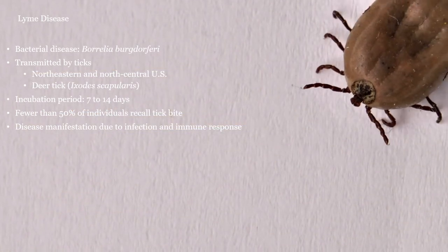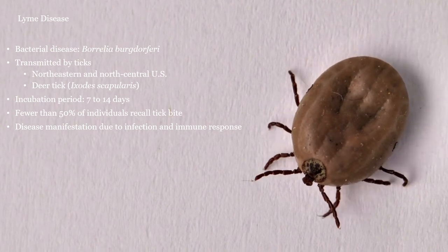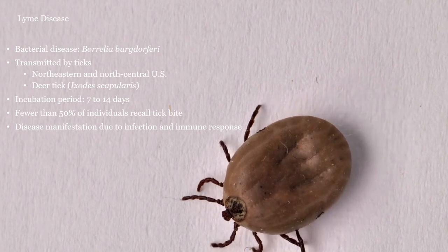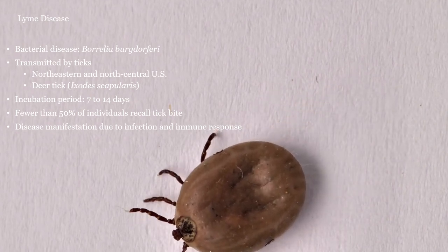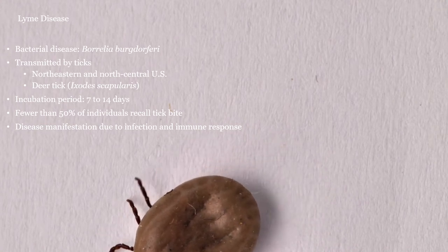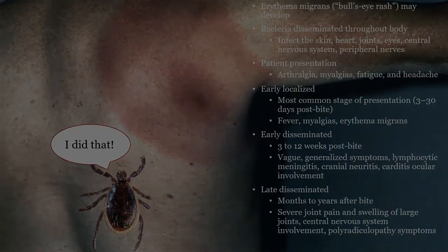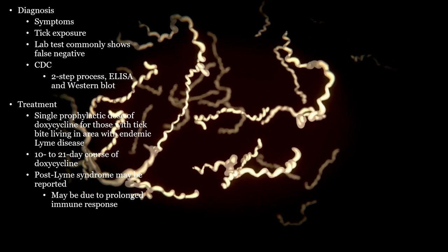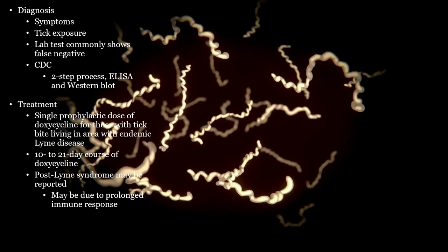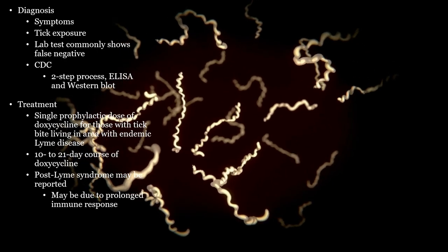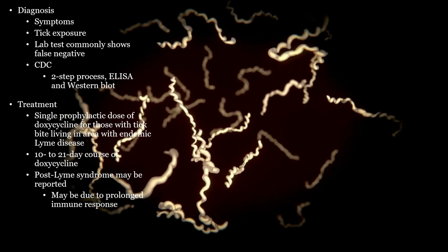Lyme disease is from tick bites, particularly the deer tick. It is predominant in certain geographical areas, and the bacteria responsible is Borrelia burgdorferi. Less than half recall the tick bite, and it can take up to two weeks before symptoms begin. A bullseye rash is characteristic of this disease. It usually presents with arthralgias, fatigue, myalgias, and headache. It can worsen if not treated, but once treated should improve. There is also a chronic version following treatment with some controversy. Treatment is with doxycycline, which must be completed to alleviate symptoms. Diagnosis can be hard if the rash is not present, as the antibody test can be frequently false-negative.